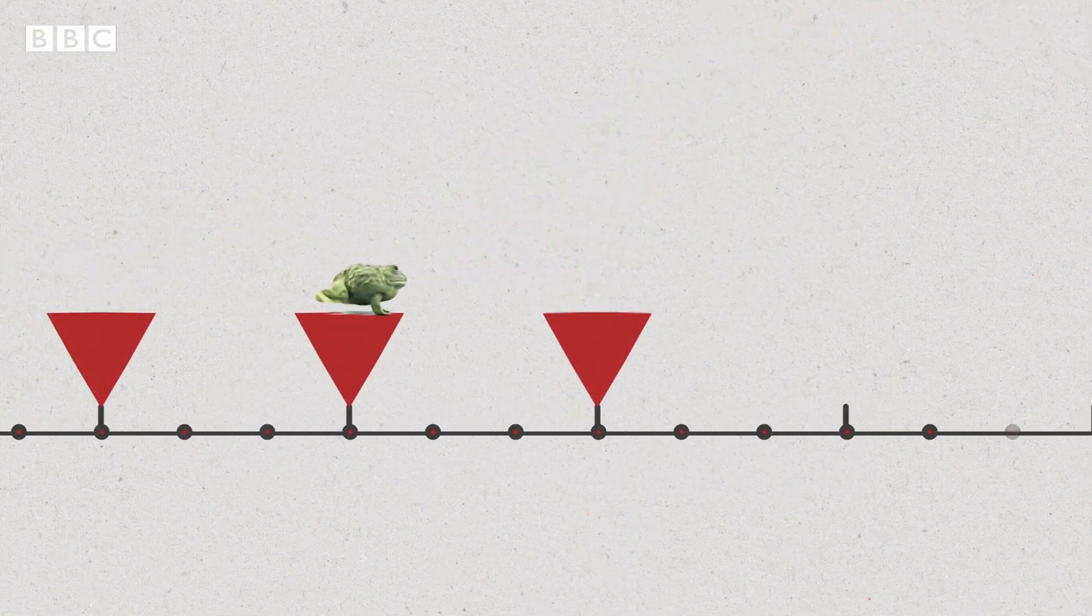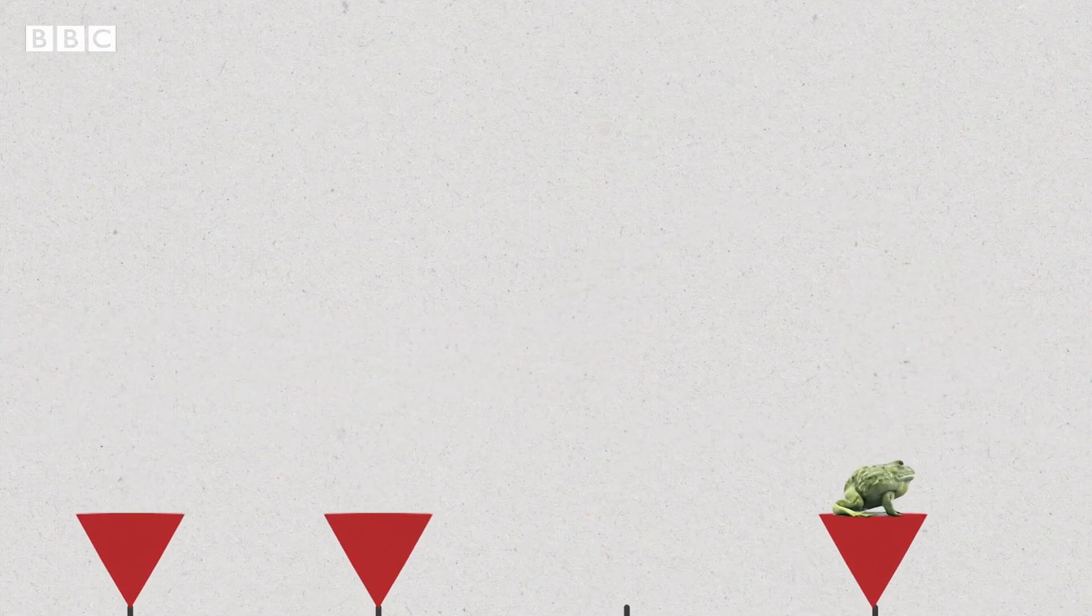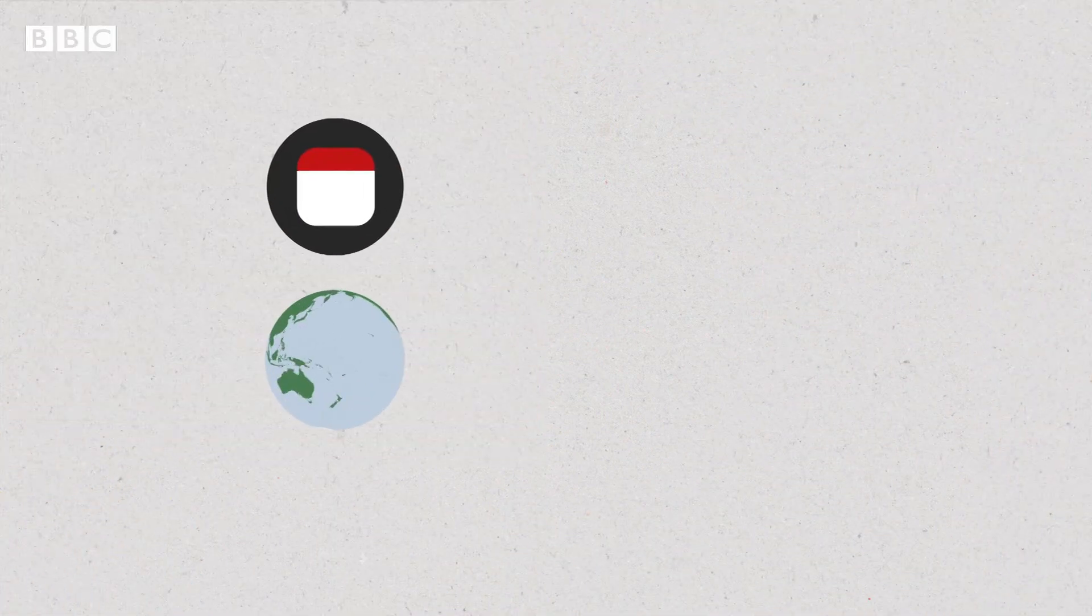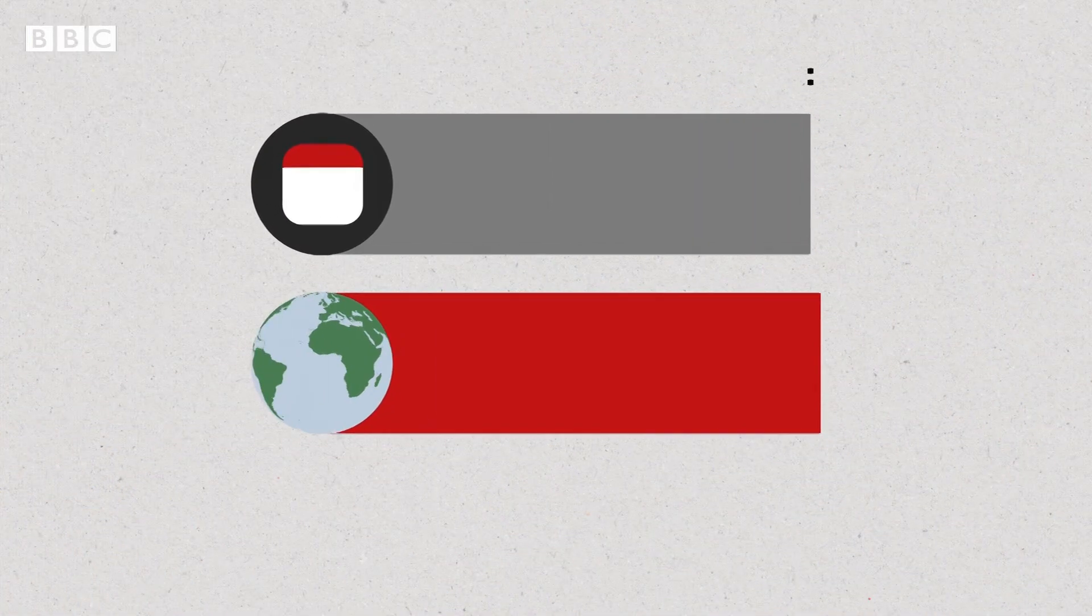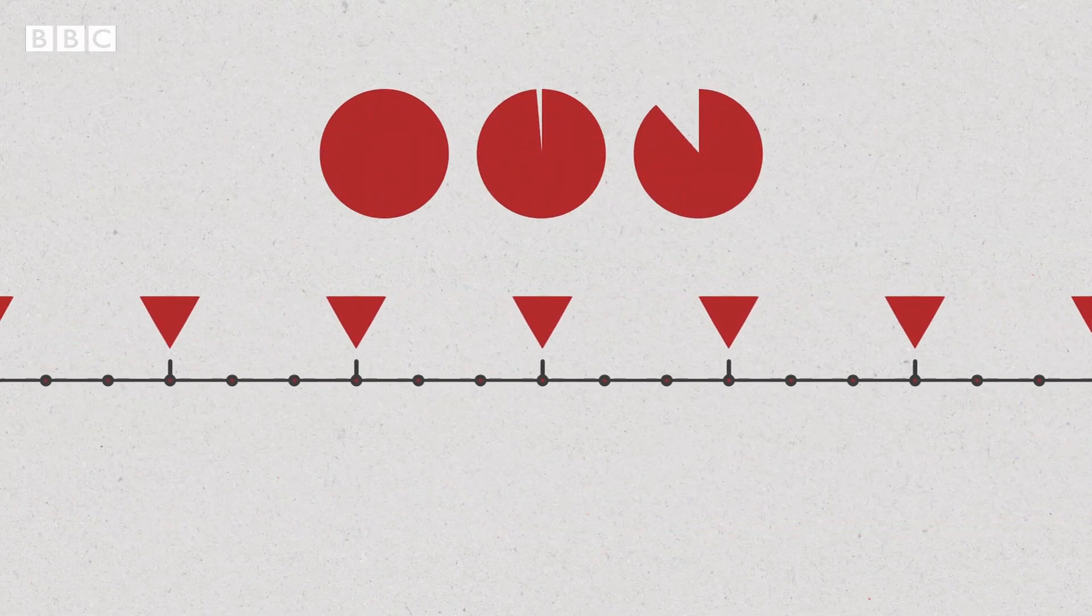But we don't actually have a leap year every four years. And here's why. Remember how we rounded up that 0.24 to a quarter? Well, that difference does eventually add up, pushing the whole system out of sync again by three days out of every 400 years, to be precise.